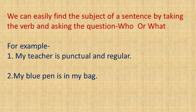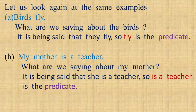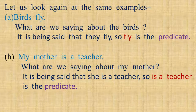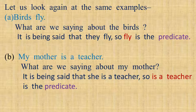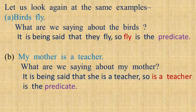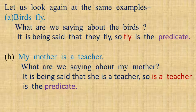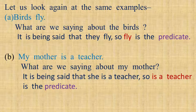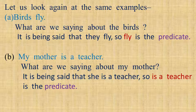Of course, it is. Let us take the same examples again. Birds fly. Birds is the subject because we are saying about birds. But what are we saying about the birds? That they fly. So, here 'fly' is the predicate. In the same way, in the other sentence, 'My mother is a teacher,' my mother is the subject. And what is said about my mother? That she is a teacher. So, 'is a teacher' is the predicate in this sentence.